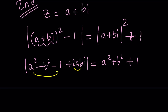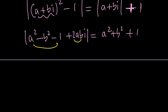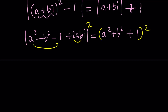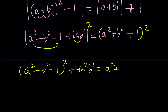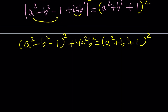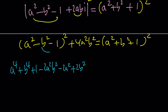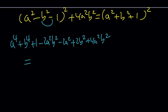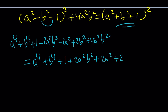Now we square both sides to avoid dealing with square roots. On the left, we expand the absolute value squared as the sum of the squared real and imaginary parts: a⁴ + b⁴ + 1 − 2a²b² − 2a² + 2b² + 4a²b². On the right we get a⁴ + b⁴ + 1 + 2a²b² + 2a² + 2b².